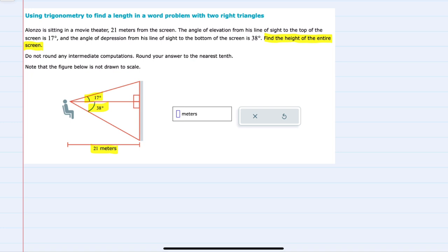The instructions say do not round any intermediate computations and to round our answer to the nearest tenth. I'll start by recognizing that what we have here is two right triangles, the one on the top and the one on the bottom.